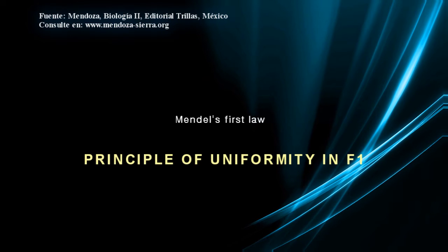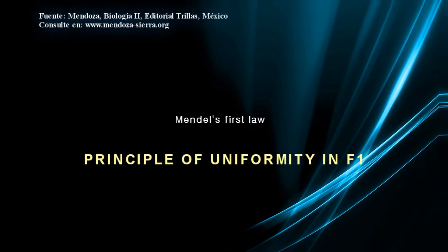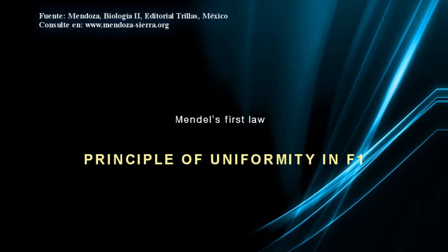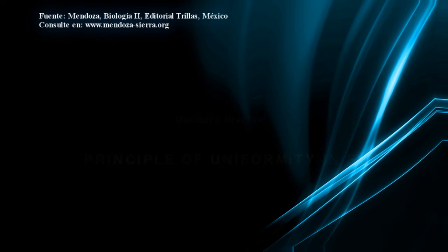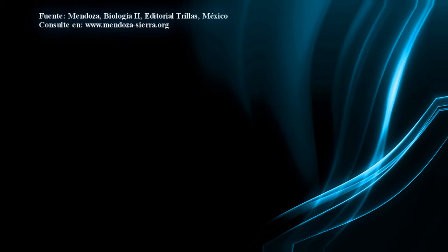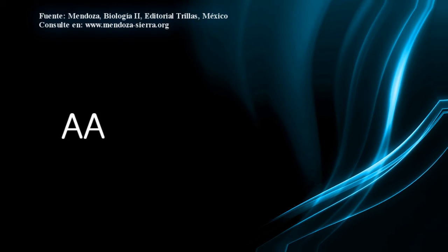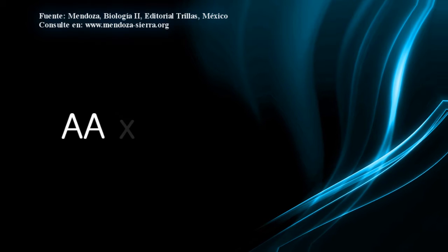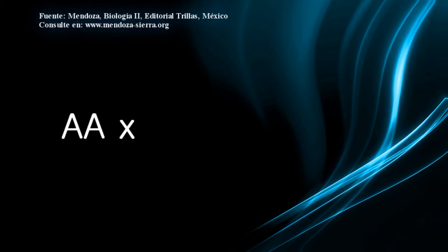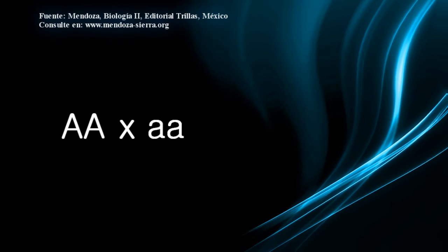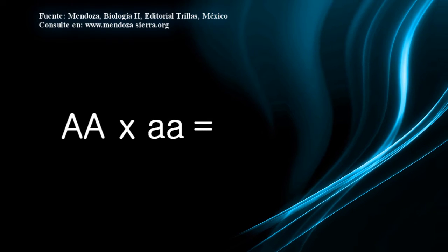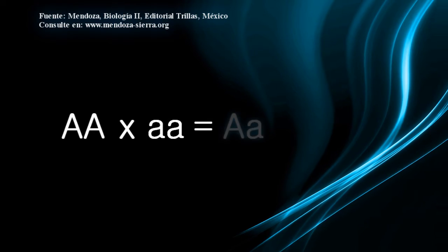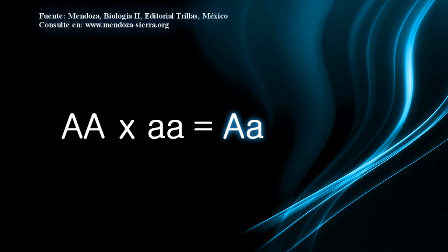Mendel's first law is also known as the principle of uniformity in F1 hybrids. Mendel's first law states that when two parents are crossed — a purebred dominant (uppercase A, uppercase A) with another purebred recessive (lowercase a, lowercase a) — all offspring are equal hybrids: uppercase A, lowercase a.